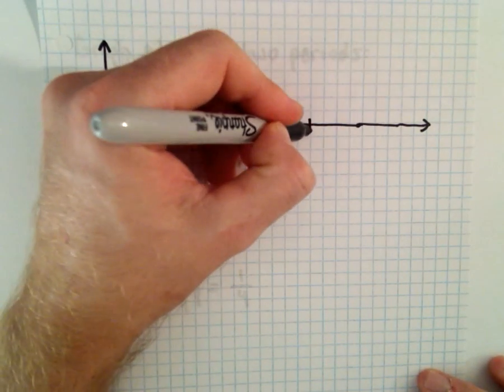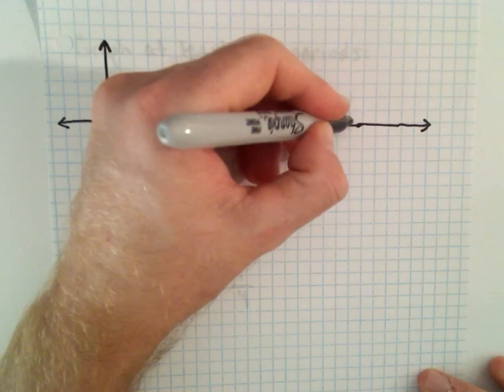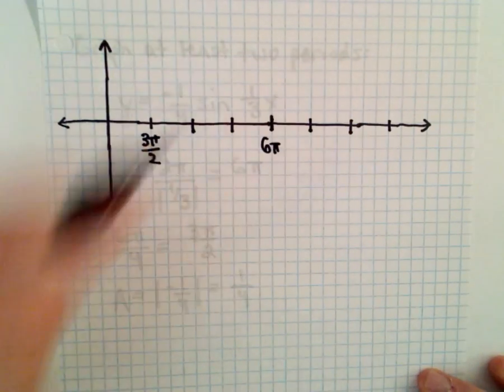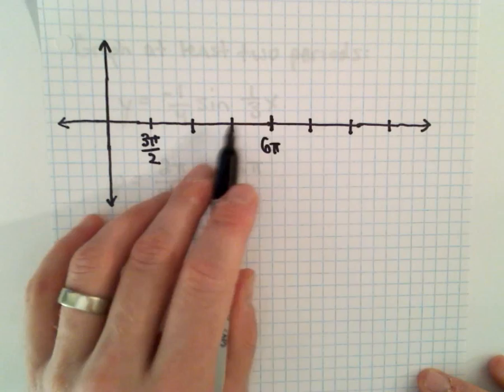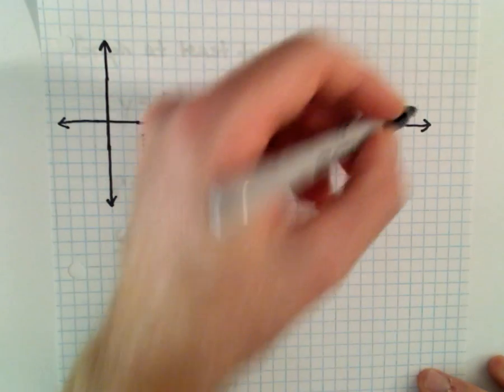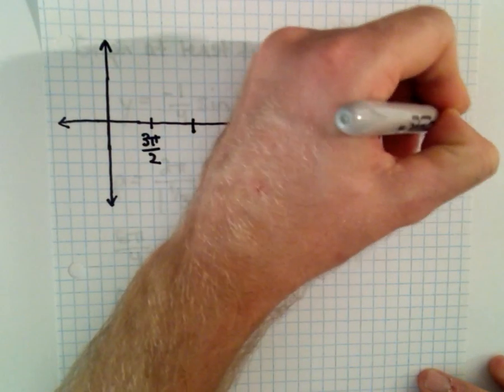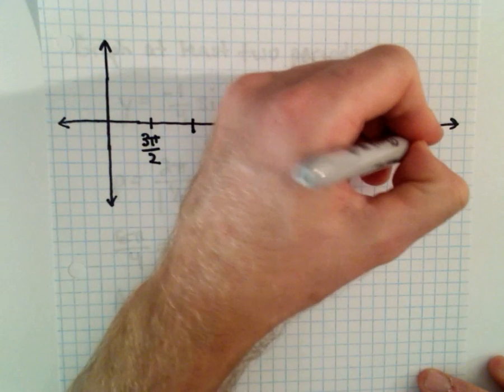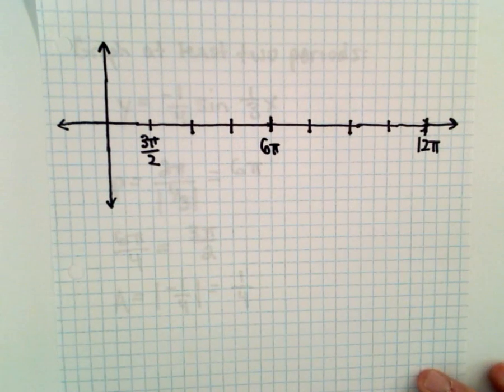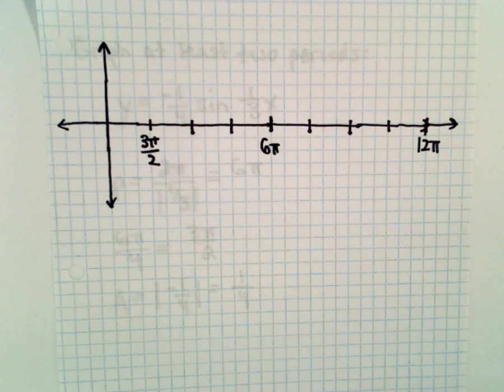And then another 3, another 3, another 3. We need one more, and that'll be the end of the second period, which will put us out at 12 pi.